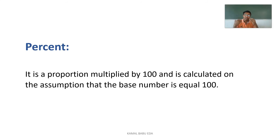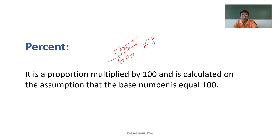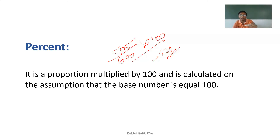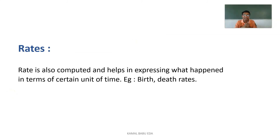Percentage is a proportion multiplied by 100, calculated on the assumption that the base number equals 100. For example, if your total marks are 600 and you obtained 505, you divide 505 by 600 and multiply by 100 to get approximately 84%. This is how percentage is calculated — obtained amount divided by total, multiplied by 100.